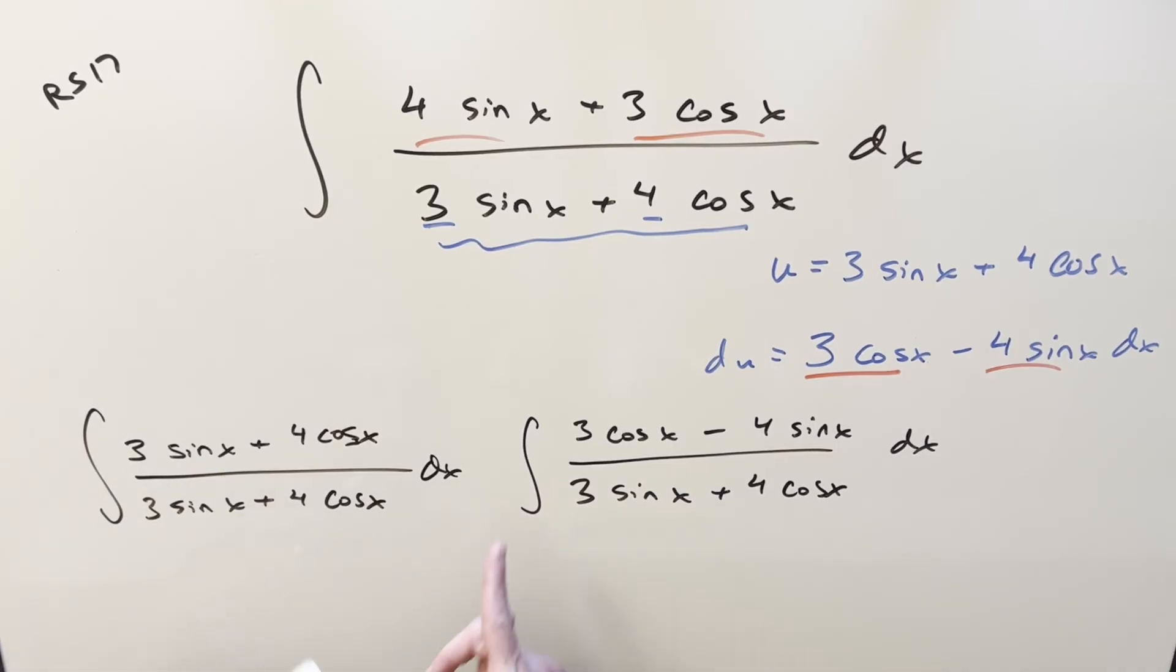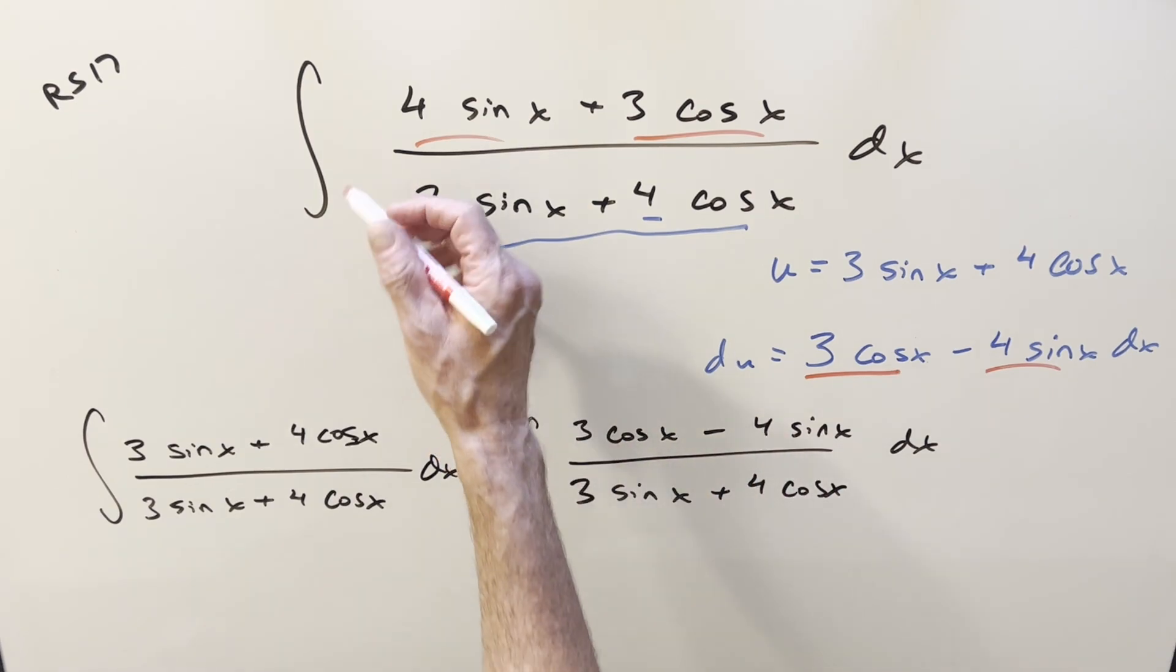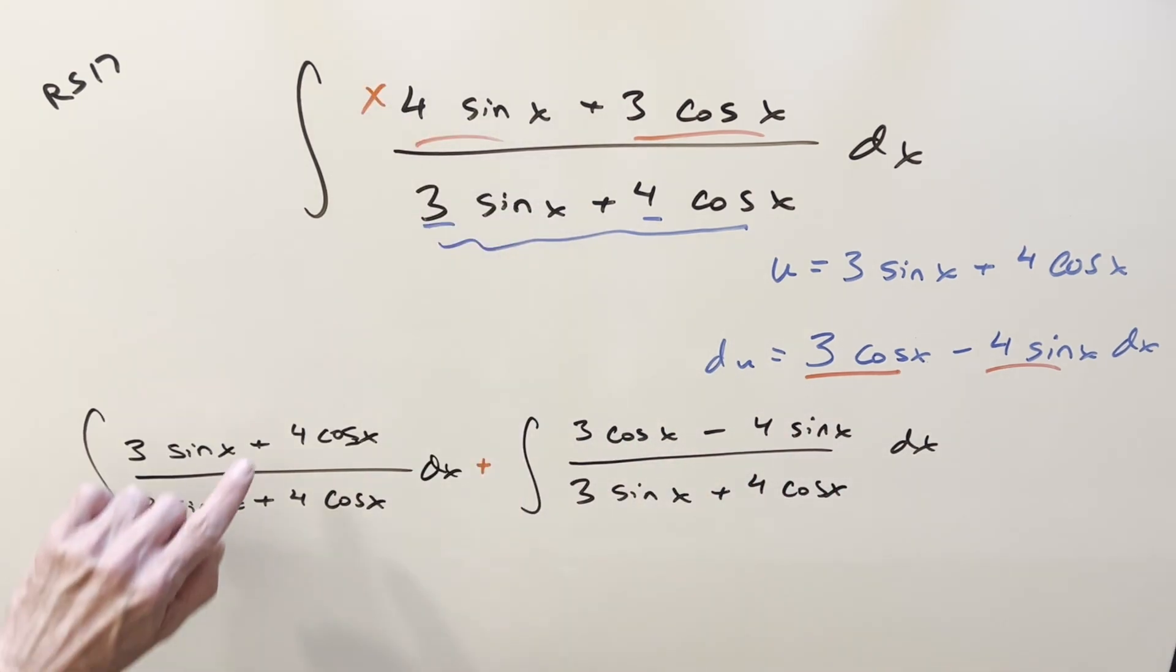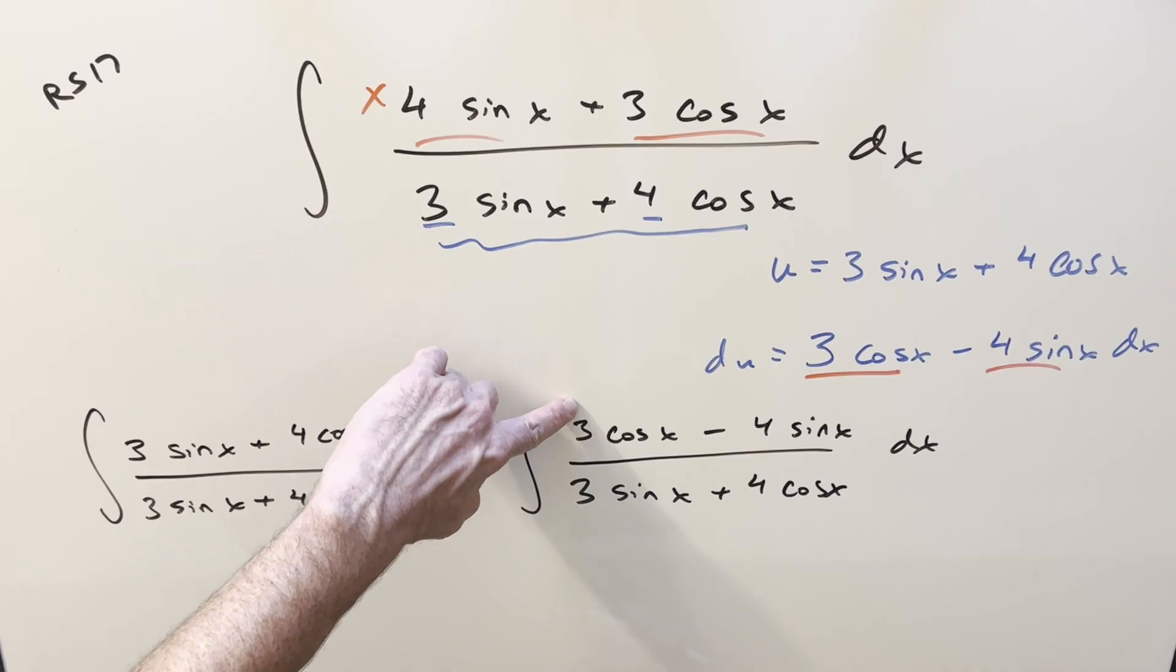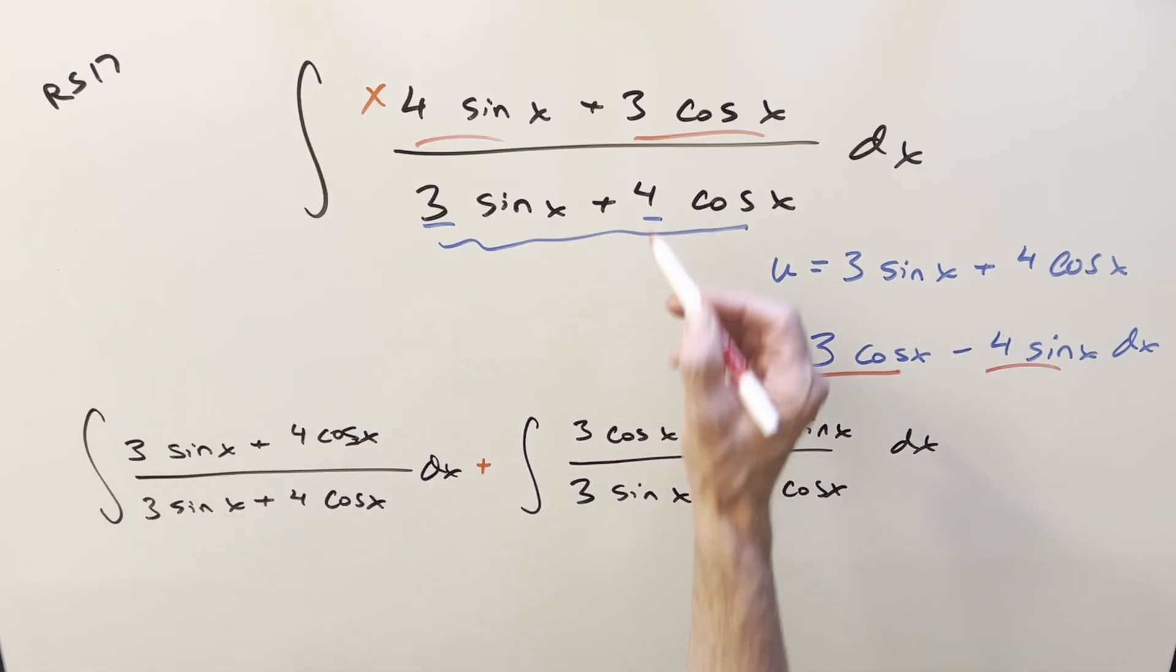The only thing is, if we just did a plus sign here and you add across, now you've got 3 sine x minus 4 sine x is minus sine x. Doesn't match 4 right there. Here you get 4 plus 3 cosine x should be 7 cosine x. Doesn't match that.